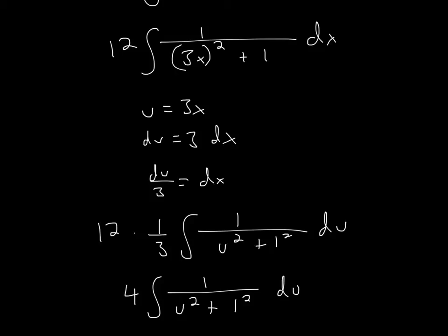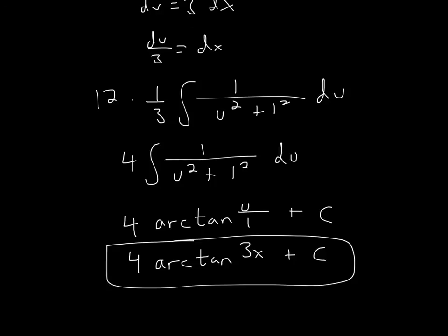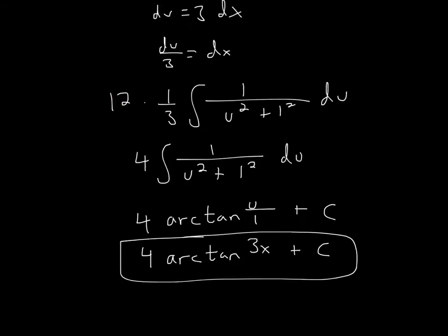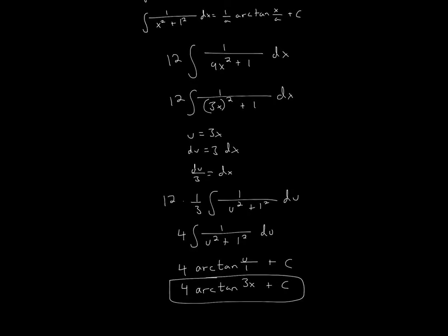Now we can actually use the formula. All I did here was simplify: 12 times one-third is 4. The formula is one over a, arctan x over a plus C. Here, I just have 4 out front.